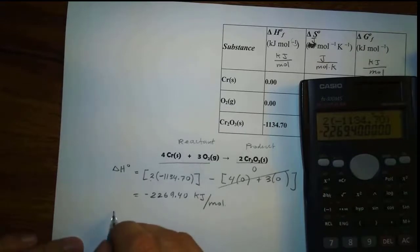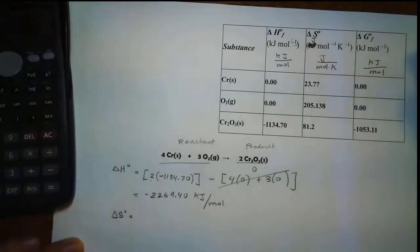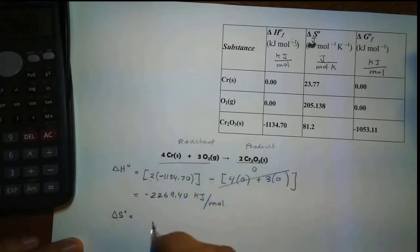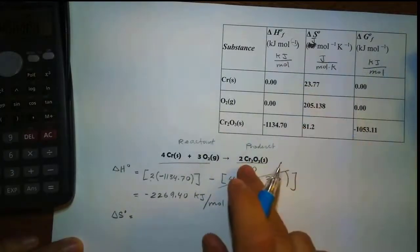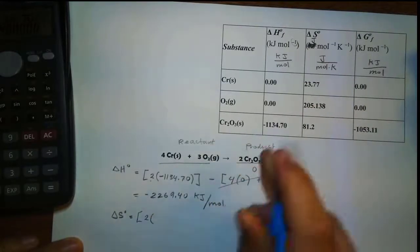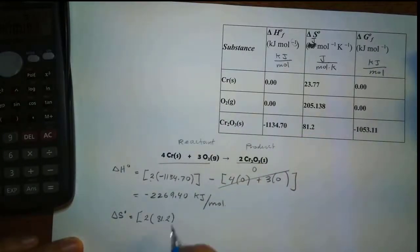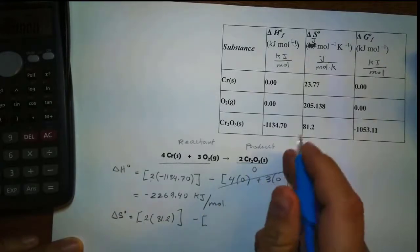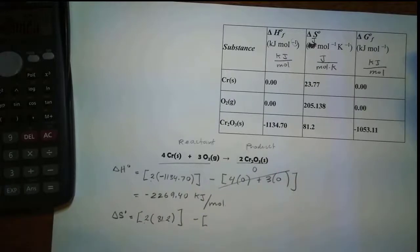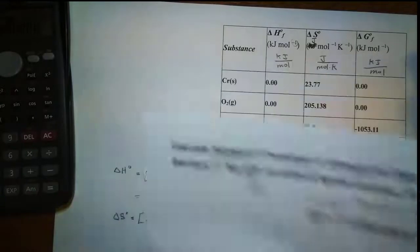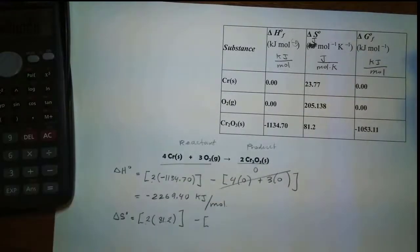Now let's solve for delta S. We do the same thing — take the sum of the product minus the sum of the reactant. For the product values of this compound, it is 2 times the delta S formation. Remember the exception: only delta H and delta G have zero for any element. But S is not — so we have to realize there is a value for it.